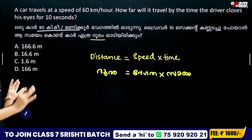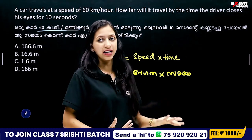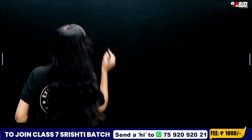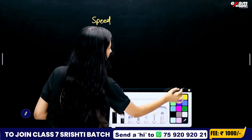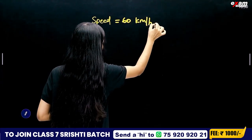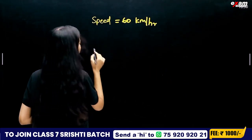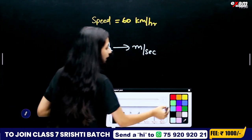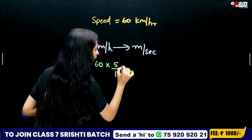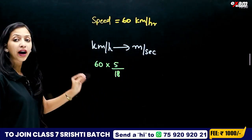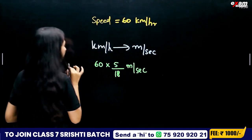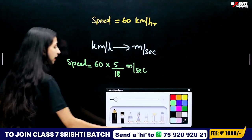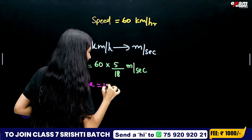We have a unit mismatch — speed is in km per hour and time is in seconds. So we need to convert km per hour to meters per second. We multiply by 5/18. We multiply 60 by 5/18, and time is 10 seconds.